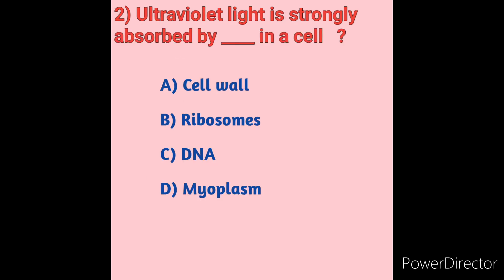Question 2: Ultraviolet (UV) light is strongly absorbed by which component in a cell? Option A: Cell wall, Option B: Ribosomes, Option C: DNA, Option D: Cytoplasm. The phenomenon of UV absorbance increasing as DNA is denatured is known as a hyperchromic shift. UV radiation strongly affects DNA — double-stranded DNA absorbs less strongly than denatured DNA due to stacking interactions between the bases. So UV light is strongly absorbed by DNA in the cell. Option C is the correct answer.